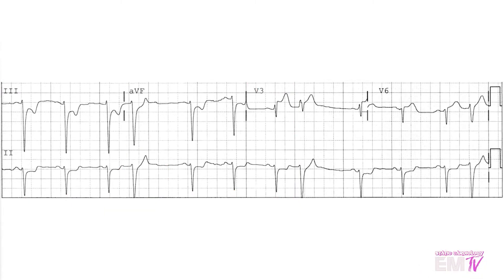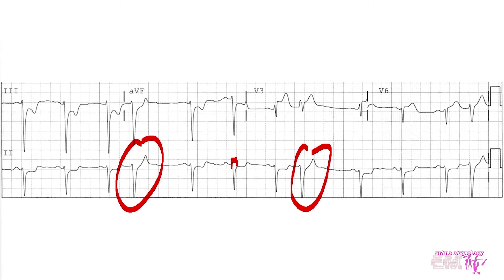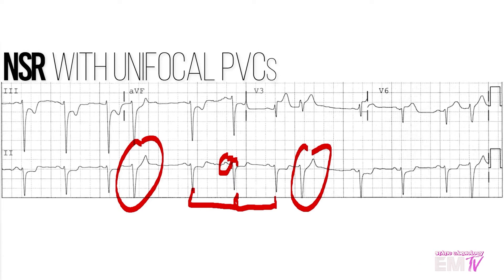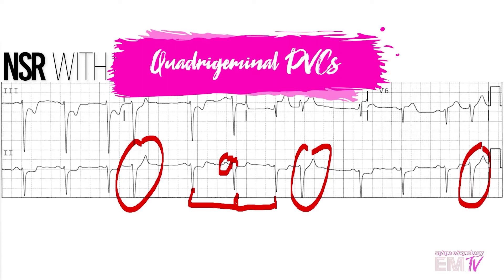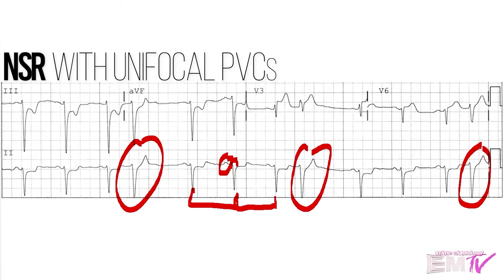Next thing I'll do is identify this actual rhythm. Now knowing that this is a PVC, I'll concentrate on pretty much every other complex that's present here. I have a narrow QRS complex, presence of a P wave, and a consistent R-to-R interval. Because of this, I'll diagnose this rhythm as normal sinus rhythm with unifocal PVCs. If you look very closely at this rhythm, you'll notice there's another PVC present, and these are coming after 3 normal QRS complexes, so it's technically quadrimony, but I'm going to stick with normal sinus rhythm with unifocal PVCs.